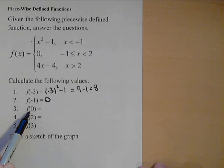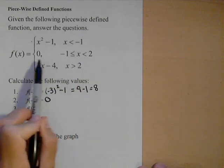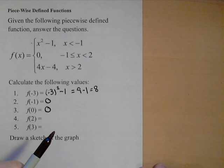f of zero, we look for which interval zero is in. Zero is between negative one and two. So once again, it's this piece, or it's just zero because that's what the output is.